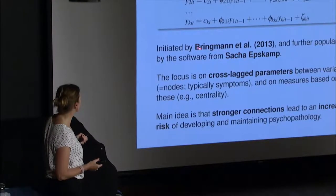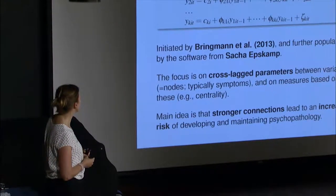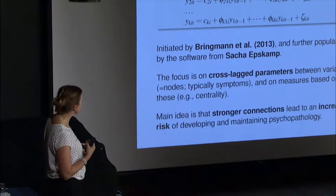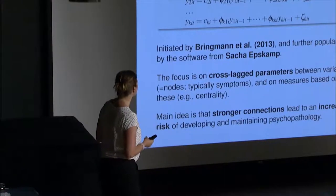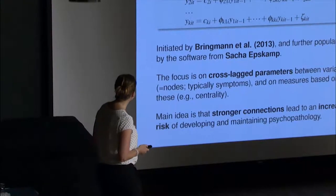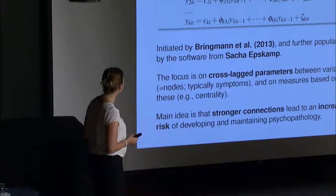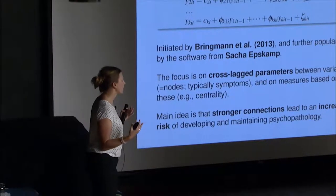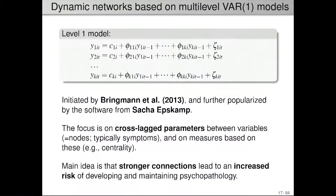The idea of having this as a multi-level model was discussed in a paper by Laura Bringmann in 2013 and is now being further popularized by software such as apps like comor, for instance. The focus is really on the cross-lag parameters, and they talk about the variables as nodes because of the link with network analysis — nodes and the strength of connections between nodes.